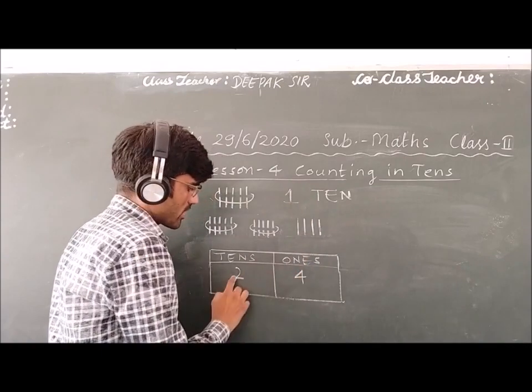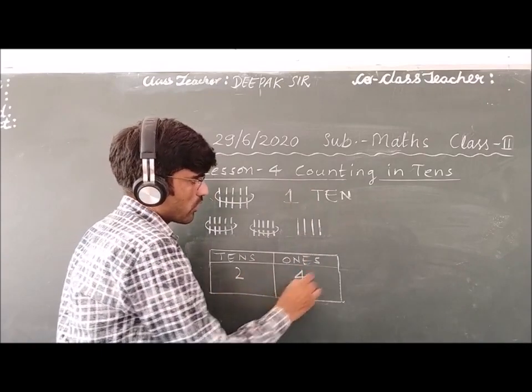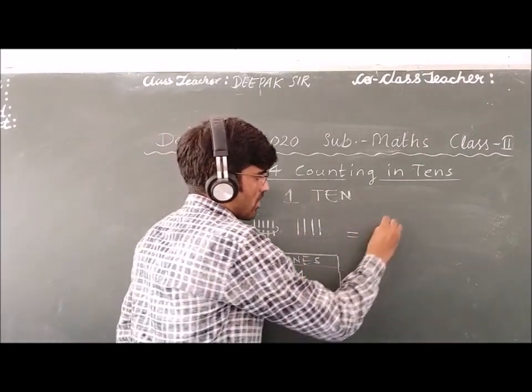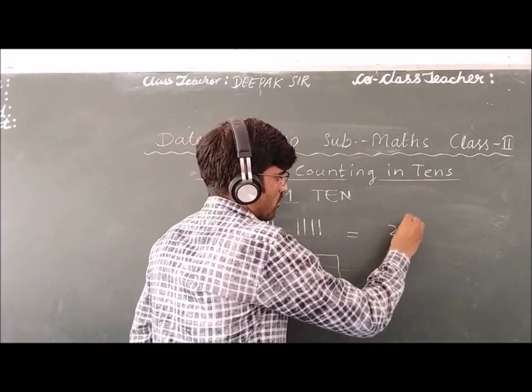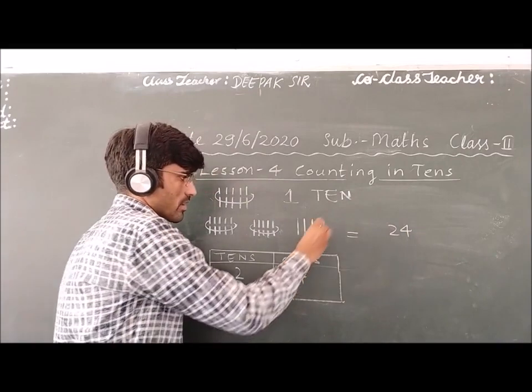Again, if you have two tens and four ones, so if you have 2 tens and 4 ones, that gives you 24.